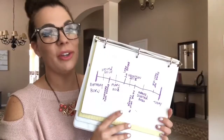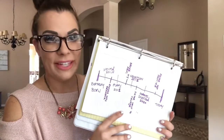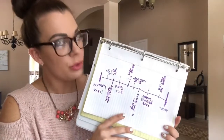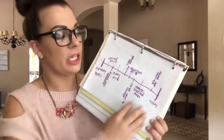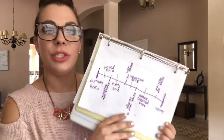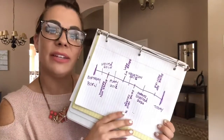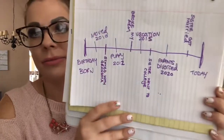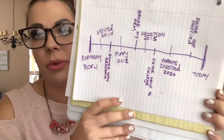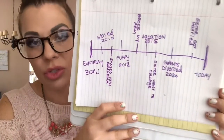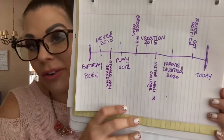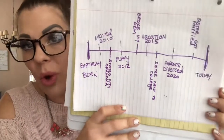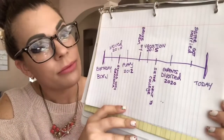Go ahead and draw out your timeline of everything that happened in your life. After you have everything filled out, think about how you would organize this information into a piece of informational writing. If you were going to write a biography about yourself, what would that look like?